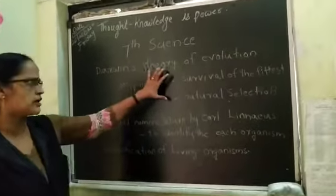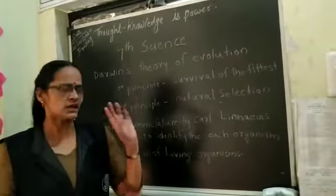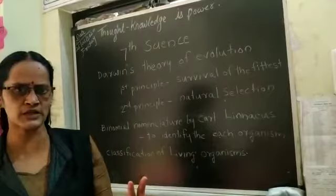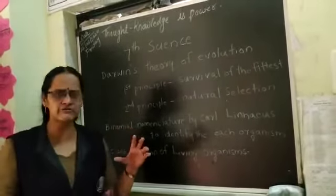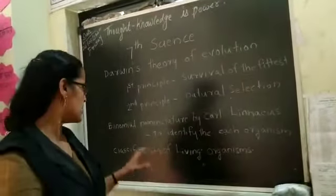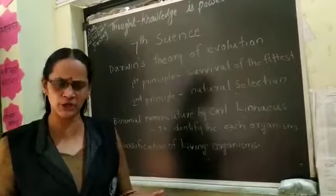We have seen the topic Darwin's theory of evolution. In that, two principles were given: survival of the fittest and natural selection. Second one is binomial nomenclature for identifying each organism. And last one is the classification of living organisms. Today I will give the notes to you.